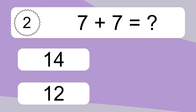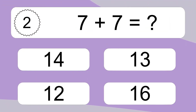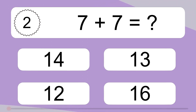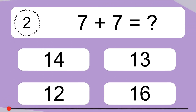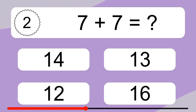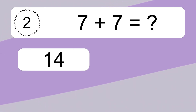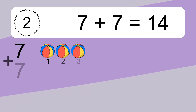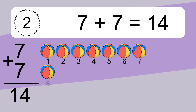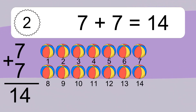7 plus 7 equals what? 7 plus 7 equals 14.